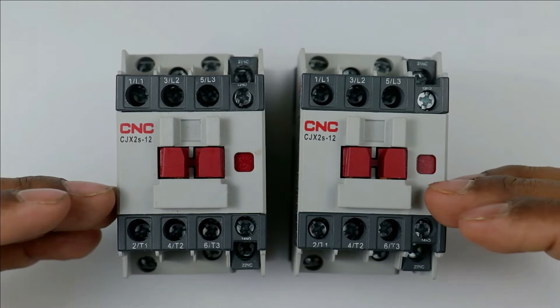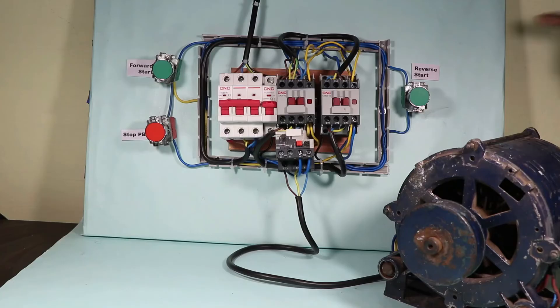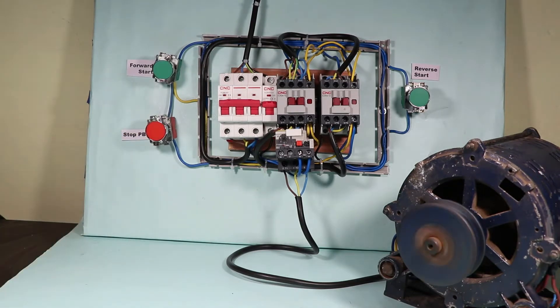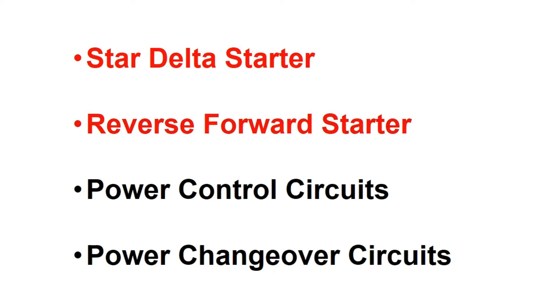If one contactor is in on condition then the other must not be turned on anyway. This condition in this case is known as interlocking. I just now explained through motor but apart from this condition there are various other cases in which interlocking is necessary.